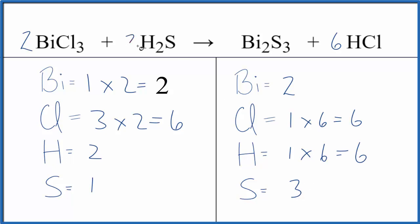Looks like if we just put a three in front of the hydrogen sulfide, two times three would balance the hydrogens, and one times three would balance the sulfur atoms. And we would be done.